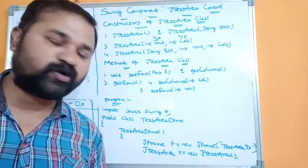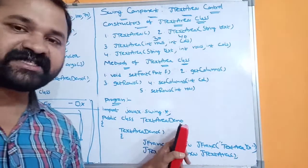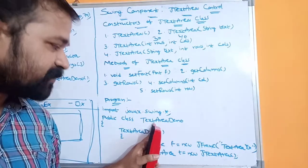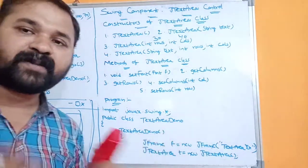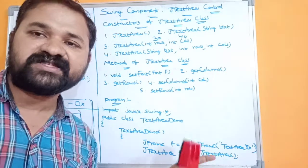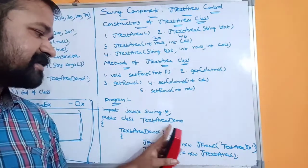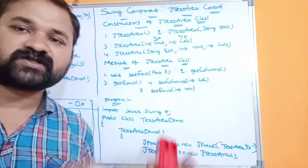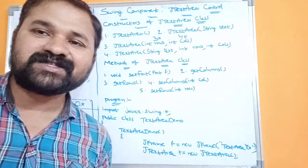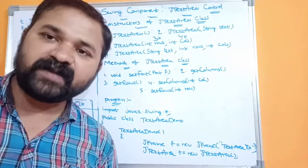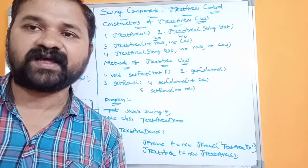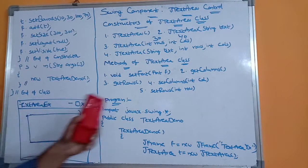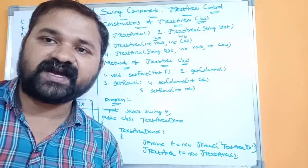To compile the program: javac TextAreaDemo.java. To execute: java TextAreaDemo. Since this is a frame-based program, we don't need an applet viewer — we can run it directly using the java command. When we run the program, we get the output window showing the JTextArea control. This completes the overview of JTextArea.